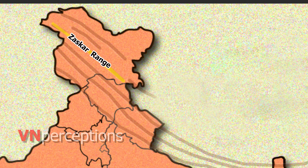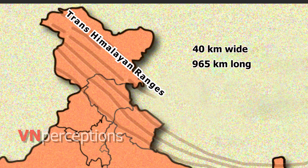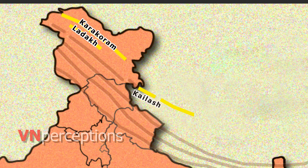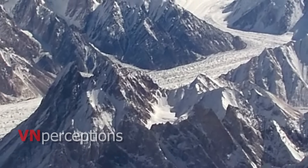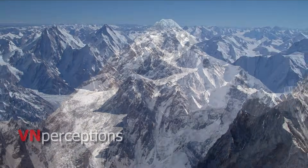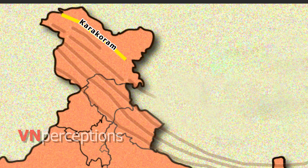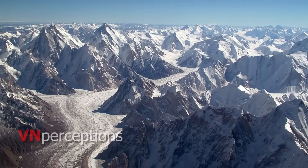The next one is the Trans-Himalayan ranges. They are about 40 kilometers wide and 965 kilometers long. It consists of the Karakoram, Ladakh and Kailash range. The Karakoram range is located in the northern part of the state of Jammu and Kashmir. It is one of the major ranges of the Himalayan system and is home to the highest concentration of peaks rising over 8,000 meters. K2 is the second highest peak in the world and the highest peak in India. It runs for a distance of 500 kilometers and is the most heavily glaciated part of the world outside the polar region.